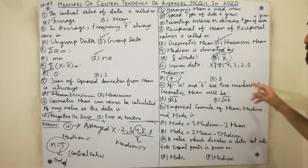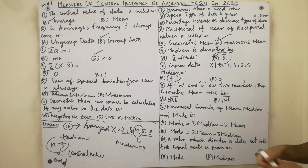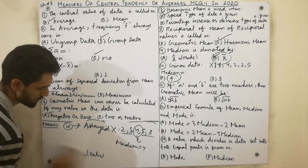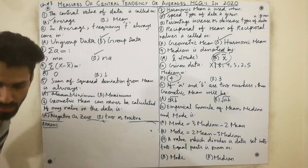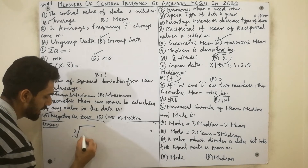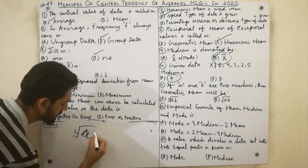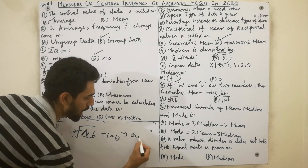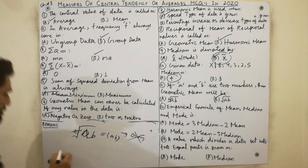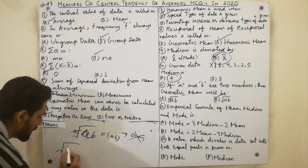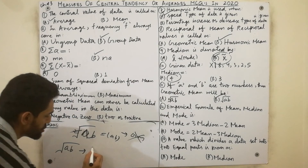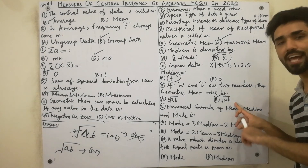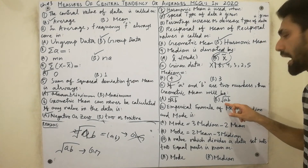If A and B are two numbers, then their geometric mean is equal to √(AB) — the positive square root of AB. Must remember: the positive square root of the product of values is called the geometric mean. So for two numbers A and B, the geometric mean = √(AB). This follows from the definition: the nth root of the product of n values is the geometric mean.